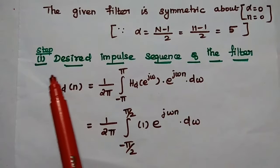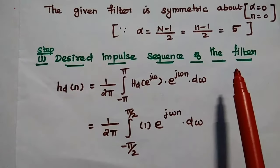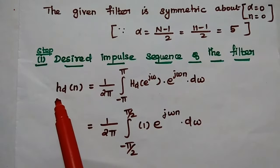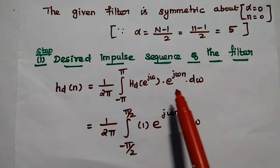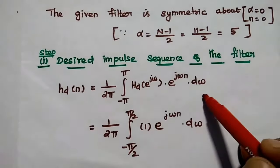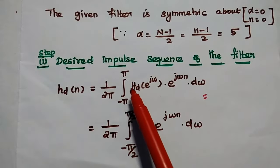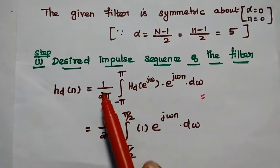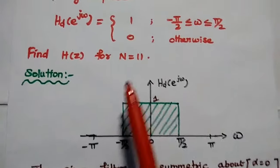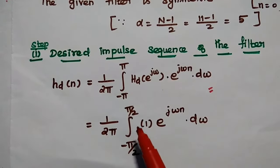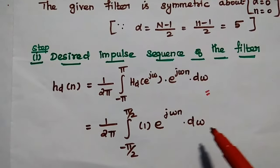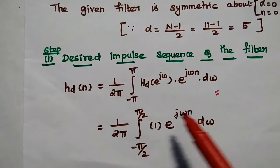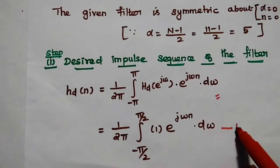The first step in this method is to find the desired impulse response sequence of the given filter. We can write the formula as hd(n) = (1/2π) × ∫ from -π to π of Hd(e^jω) × e^(jωn) dω. Here we have to substitute the value of Hd(e^jω), which is 1 from -π/2 to +π/2. So we change the limit: hd(n) = (1/2π) × ∫ from -π/2 to +π/2 of e^(jωn) dω. We consider this as the first equation.